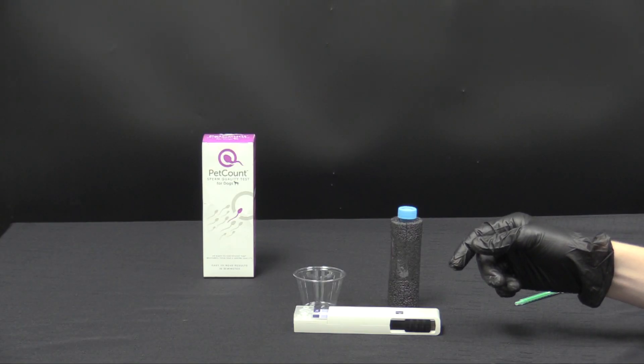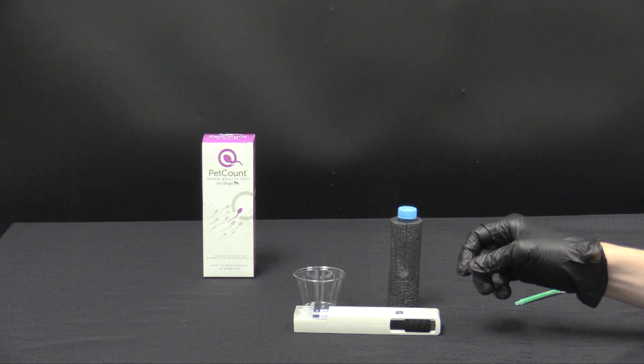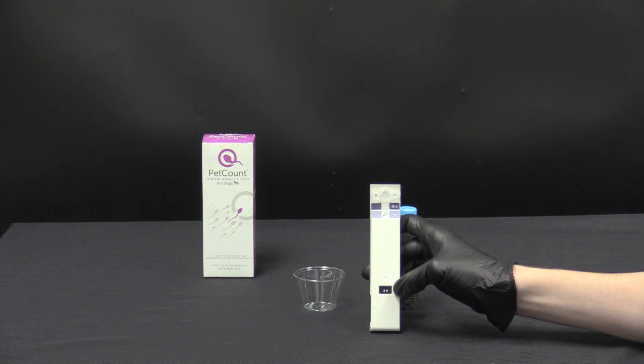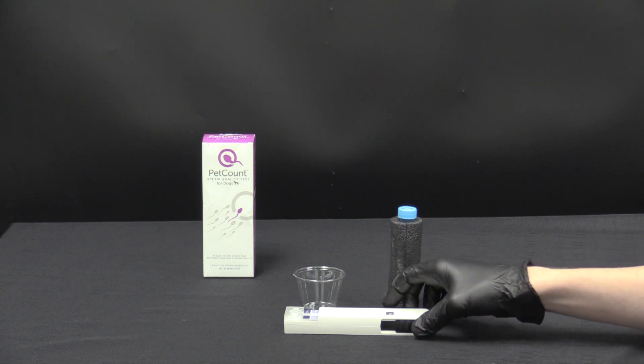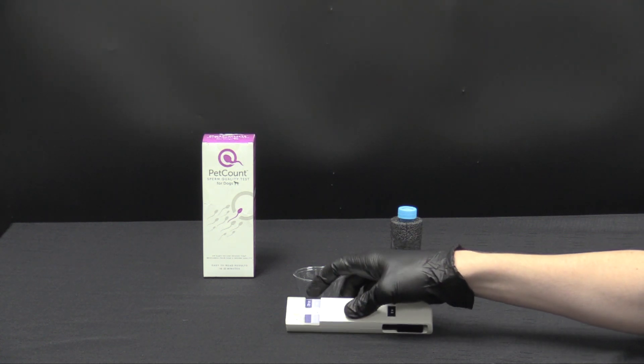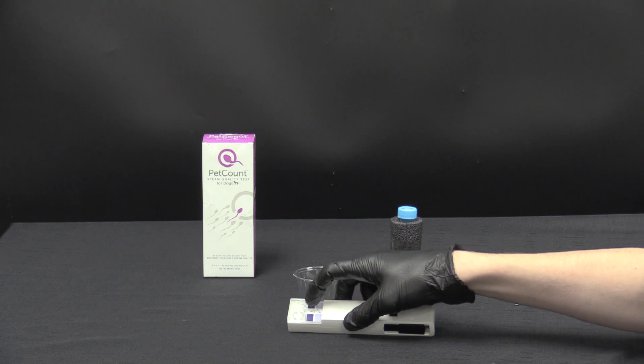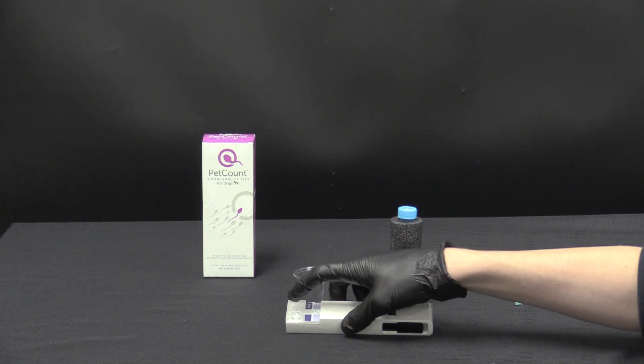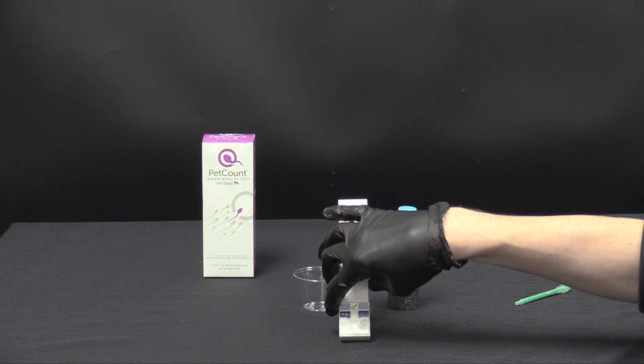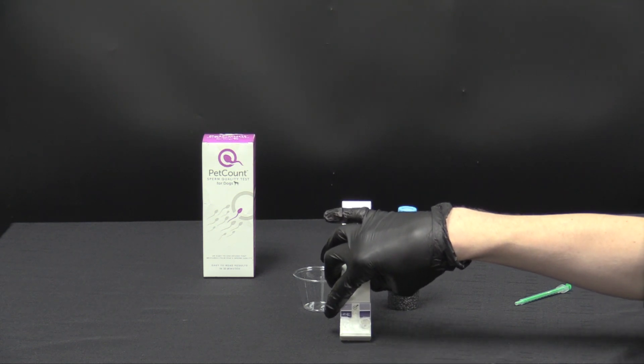First we'll take a look at the test cartridge and some of the components and features of it. You'll notice the number two with an arrow on the slider here. Please don't adjust the slider until we're ready to test. And on the front we'll notice the viewing window, the sample depositing well, and on the plastic if you look close you can see a syringe and the number one next to the depositing well.